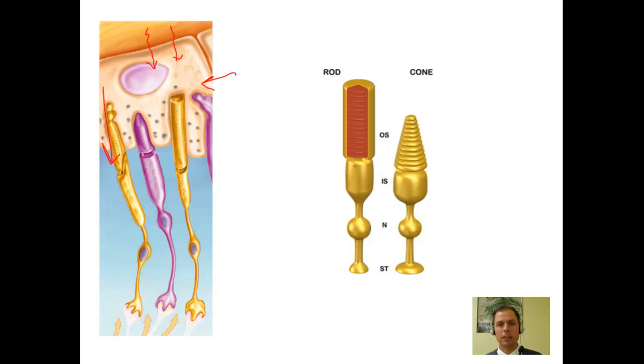An inner segment, which is an area that's chock full of mitochondria. Those will play a key role later in the regeneration of some of our key molecules that are involved in light detection. And finally, we have down here an area where the nucleus will reside of this cell body. And lastly, toward the end, we have a location referred to as the synaptic terminal.